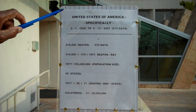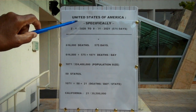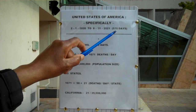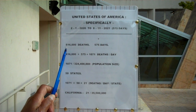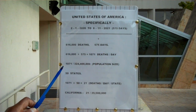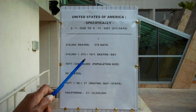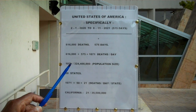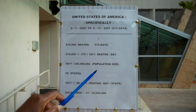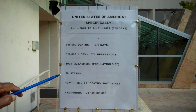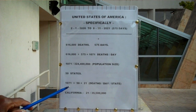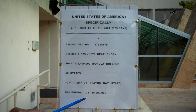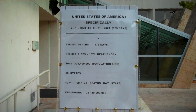For the United States of America specifically, from February 1st, 2020 to August 31st, 2021, which is 575 days, there have been 616,000 deaths over 575 days. 616,000 deaths divided by 575 days equals 1,071 deaths per day for the United States — 1,071 deaths per day per a population of 324,400,000. There are 50 states, so 1,071 divided by 50 equals 21 deaths per day per state. The state of California has an average of 21 deaths per day per 39,500,000 population.